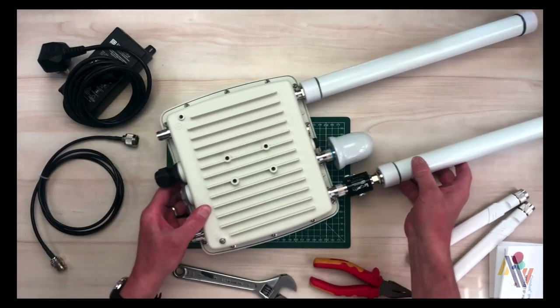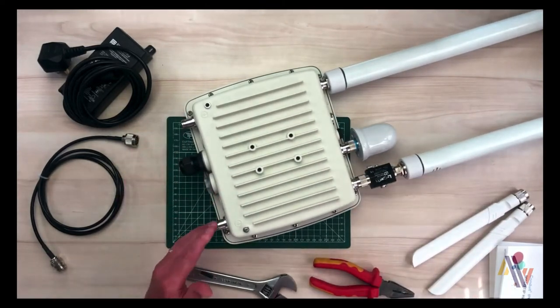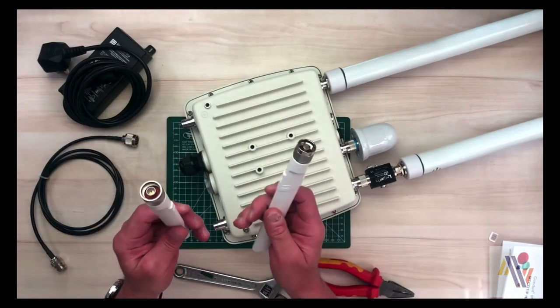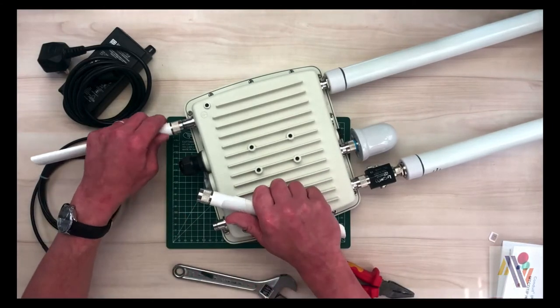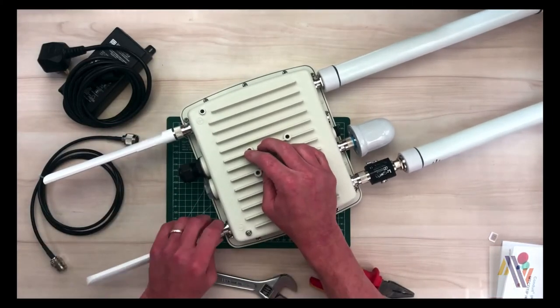Along the bottom edge of the unit we'll now attach our 4G antennas. And as before tighten with a pair of pliers.